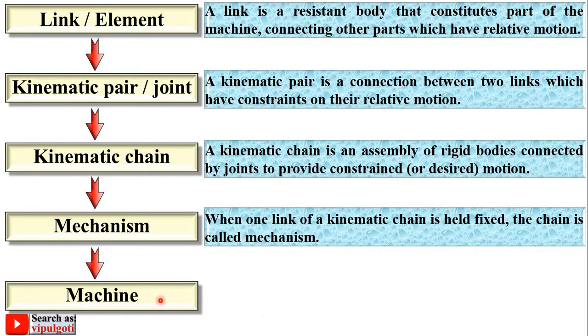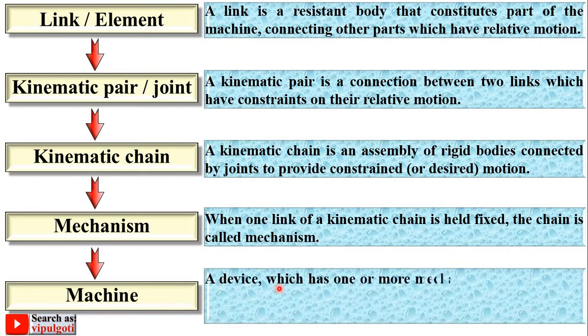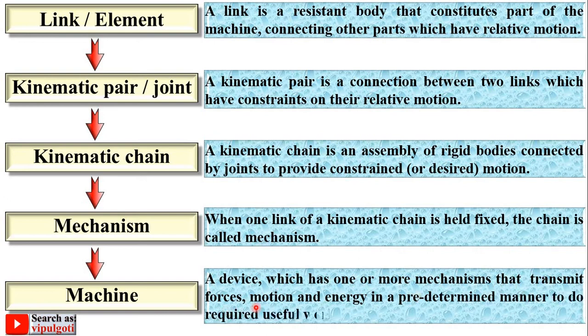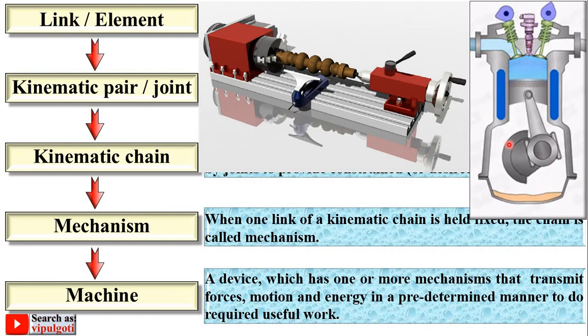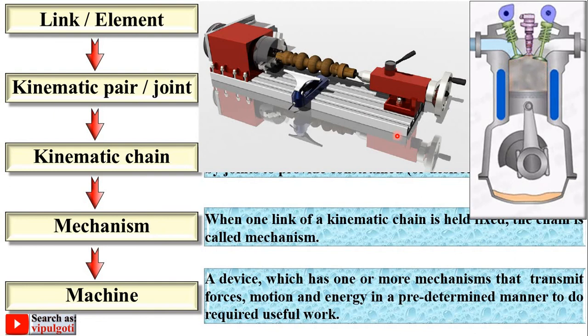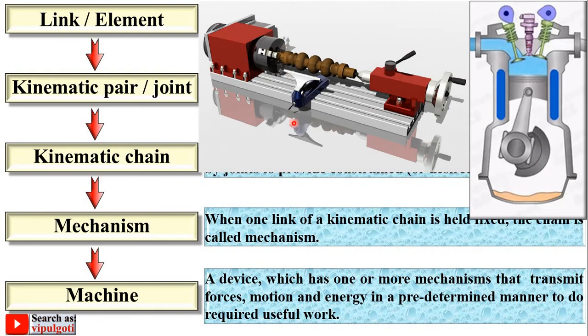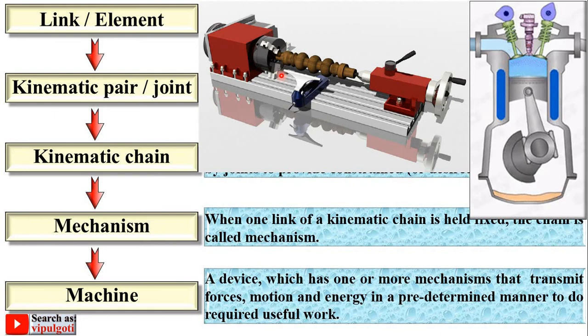Next, machine. A device which has one or more mechanisms that transmit forces, motion, and energy in a predetermined manner to do required useful work is called a machine. Here you can see this is the IC engine. This one is the lathe machine. Here one or more mechanisms are involved to do required useful work.